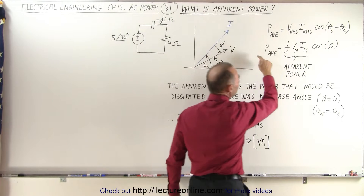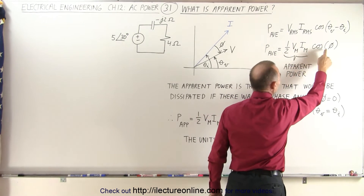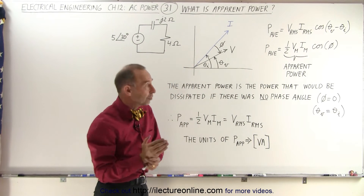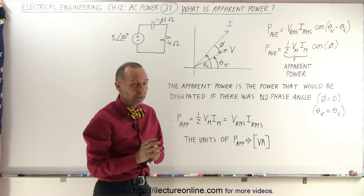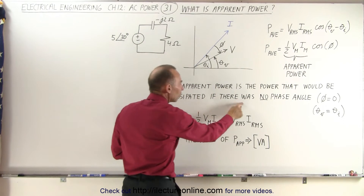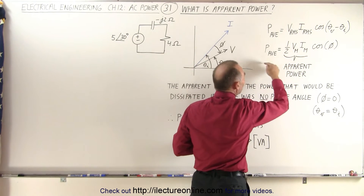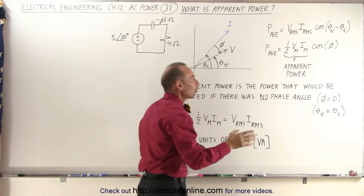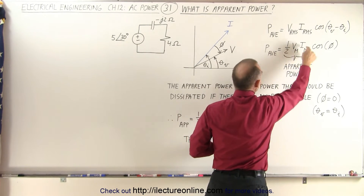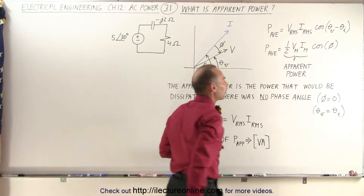If we take the equation for the average power — equal to one-half the maximum voltage times the maximum current times the cosine of the phase angle between them — this portion of that equation, one-half times the maximum voltage times the maximum current, is what we call the apparent power. We can define the apparent power as the power that would be dissipated by the circuit if there was no phase angle. The average power dissipated is less because of the cosine of phi term, while this portion of the equation, which is always constant for a particular circuit, is called the apparent power.